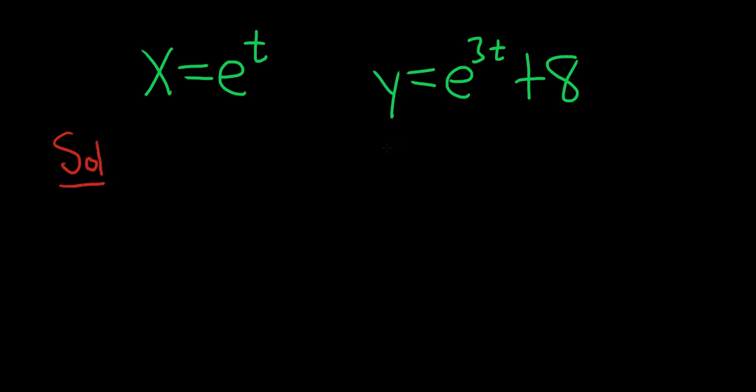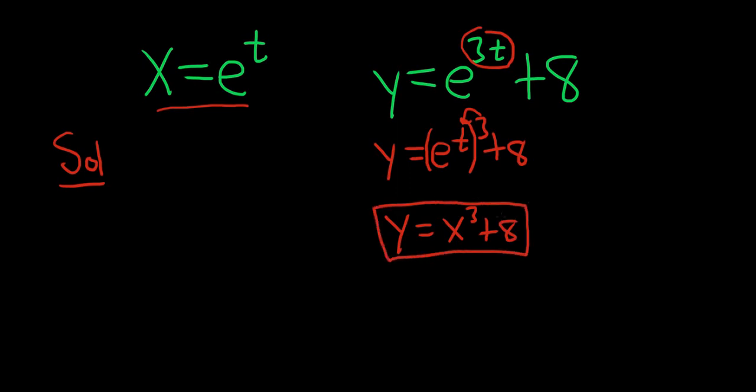So notice that we can write y as e to the t cubed and then plus 8. That's because we can multiply the 3 and the t to get 3t, so these are actually the same. And now notice that e to the t is just x, so you can write this as x cubed plus 8. So that's actually the rectangular form, so a nice little trick there.